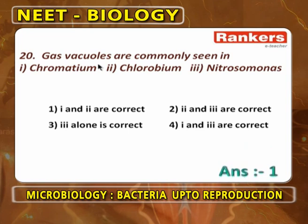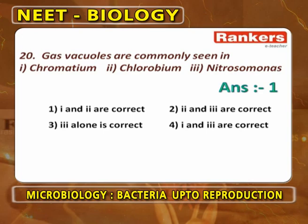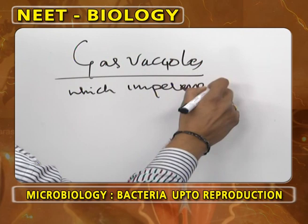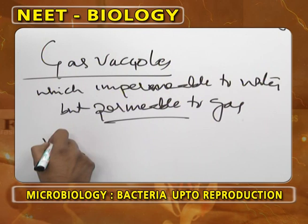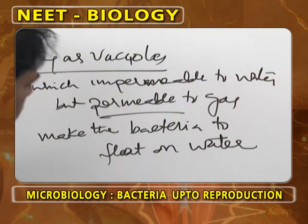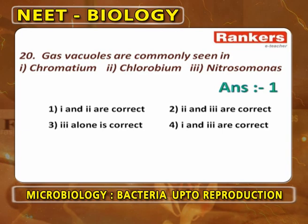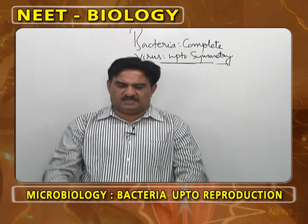Gas vacuoles are special vacuoles in some bacteria that are impermeable to water but permeable to gases. These make the bacteria float on water. Chromatium and Chlorobium show gas vacuoles; Nitrosomonas does not. So the answer is 1 and 2 are correct.